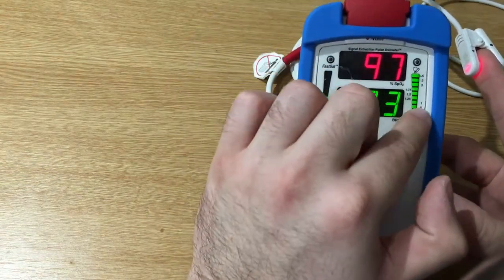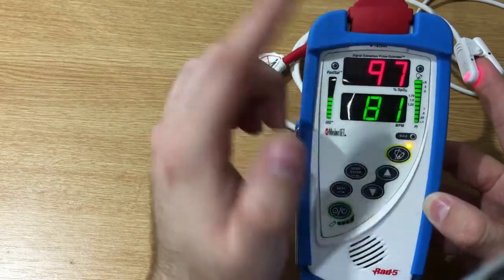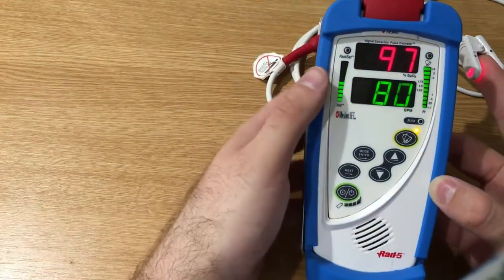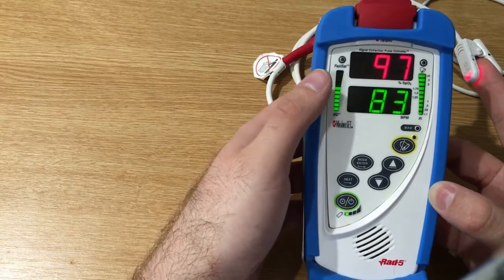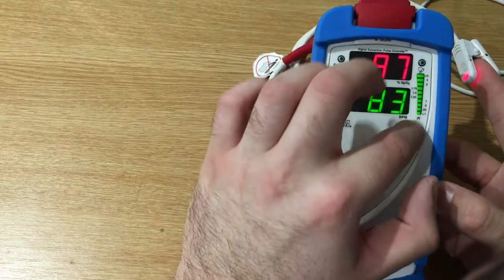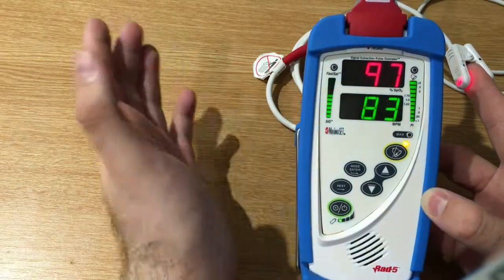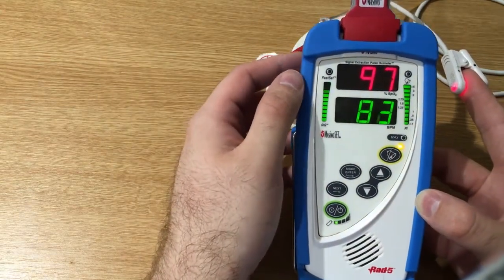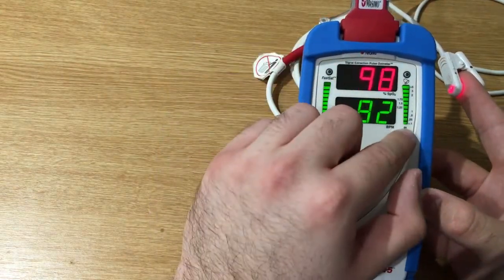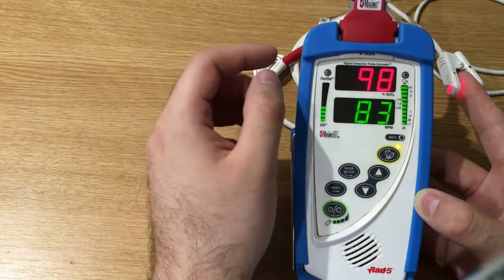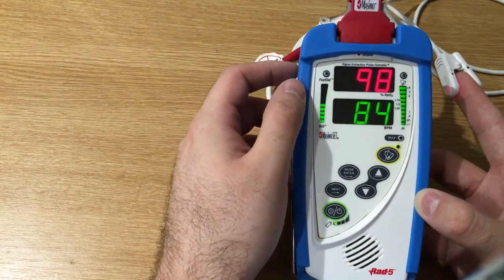So this doesn't have the PDI as the Radical 7 has. It has just the pulse index, and the pulse index is the ratio between pulsatile to the non-pulsatile blood flow.